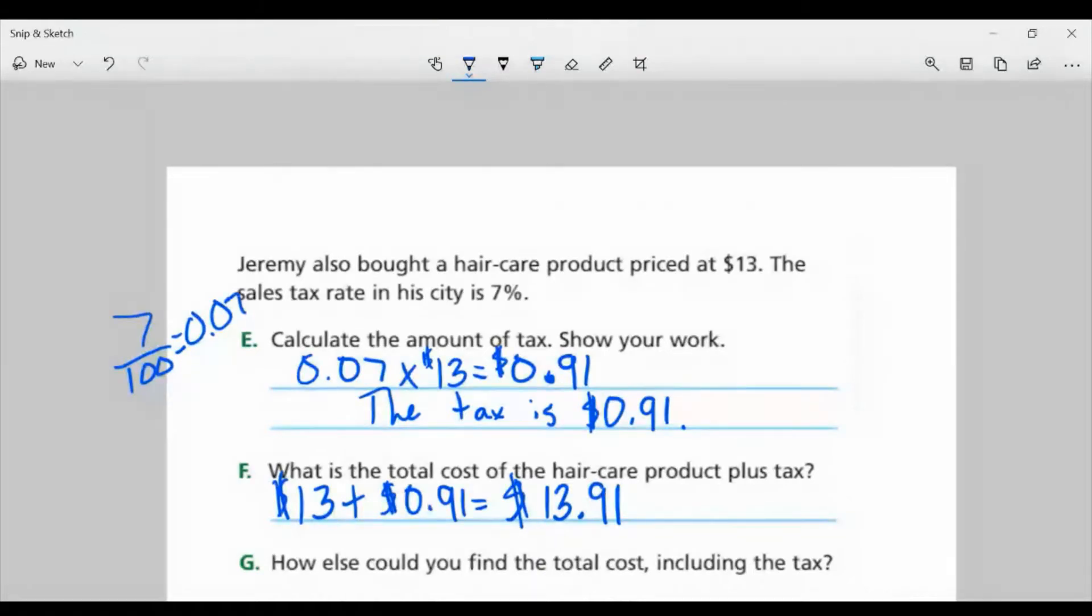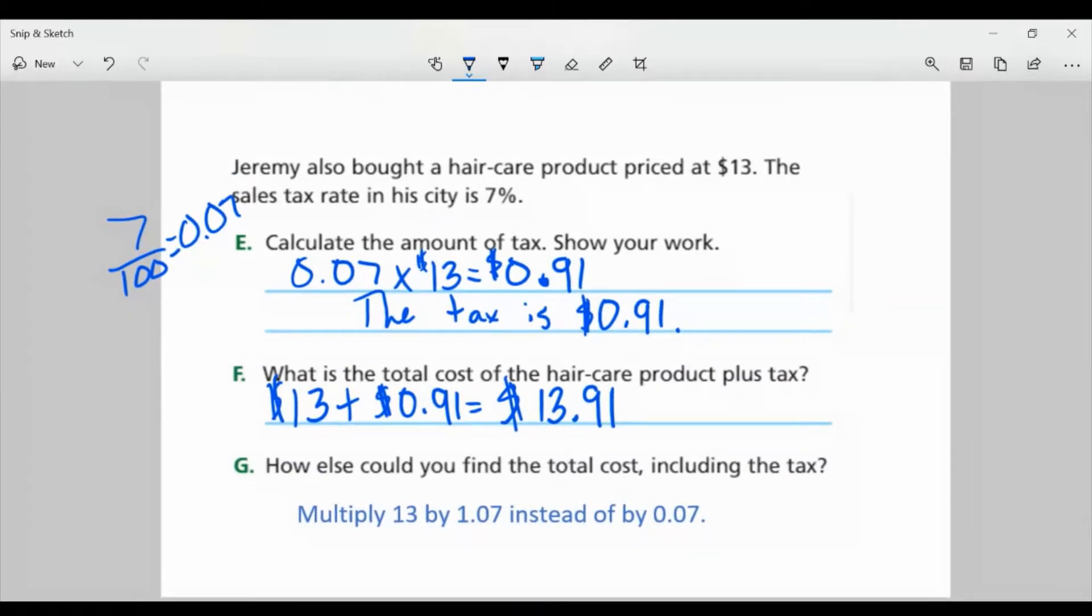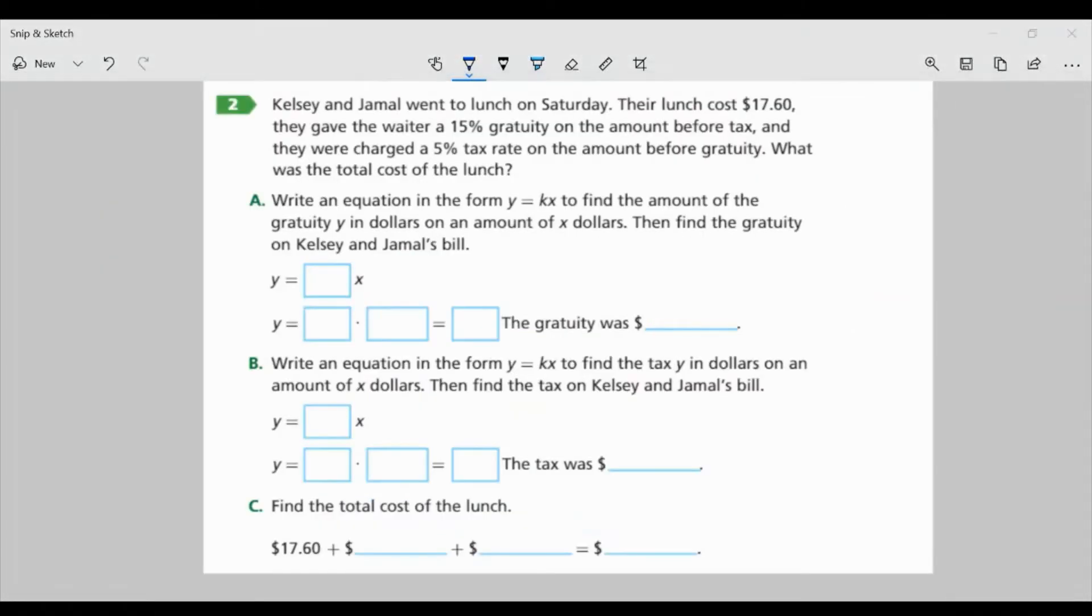Now, Part G: How else could you find the total cost, including the tax? Well, just like we did on A through D, we can multiply $13 by 1.07 instead of by 0.07, right? Because it's 107% is what we're actually paying with the tax. So let's look at page 72, task 2.